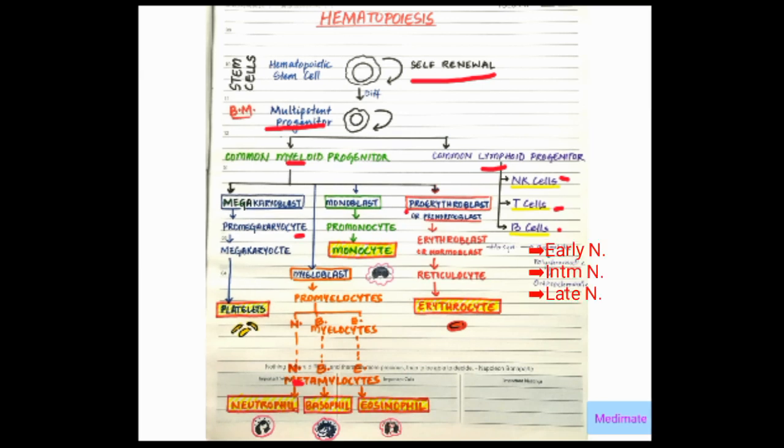Which then divides to erythroblast or normoblast, where the hemoglobin synthesis begins.